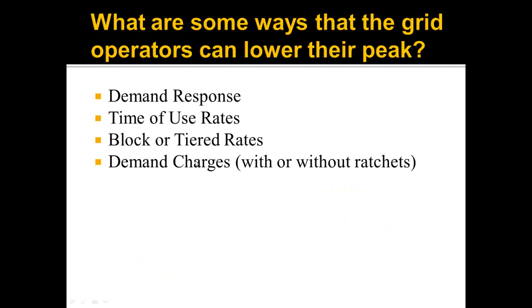There are a few different ways utilities try to get customers — whether businesses, factories, or homes — to help lower their peak. The first is demand response, the second is time of use rates, the third is block or tiered rates, and the fourth is demand charges with or without ratchets.